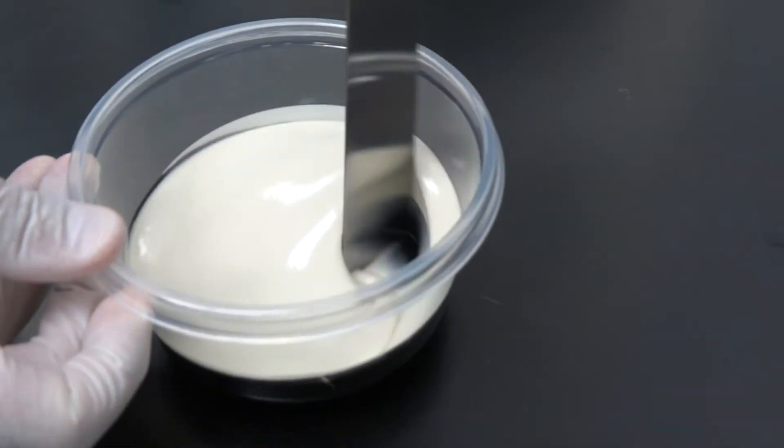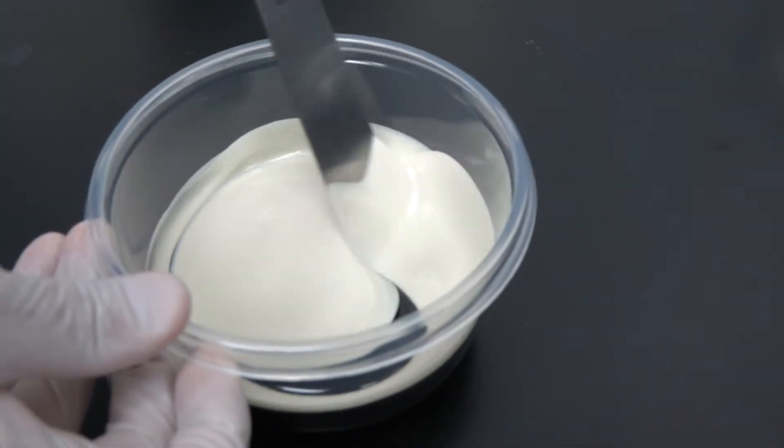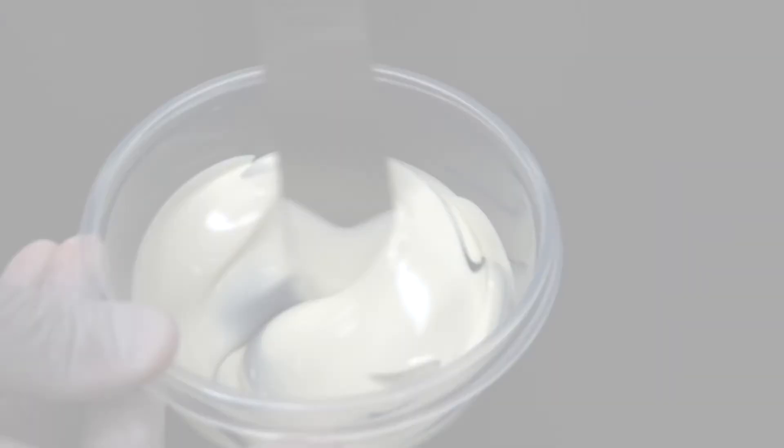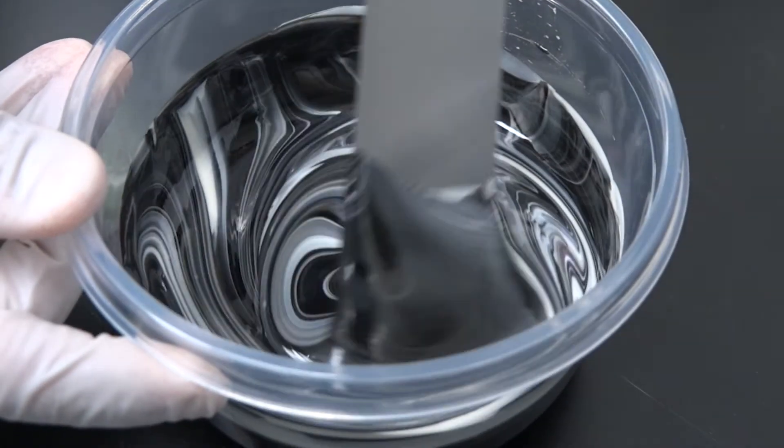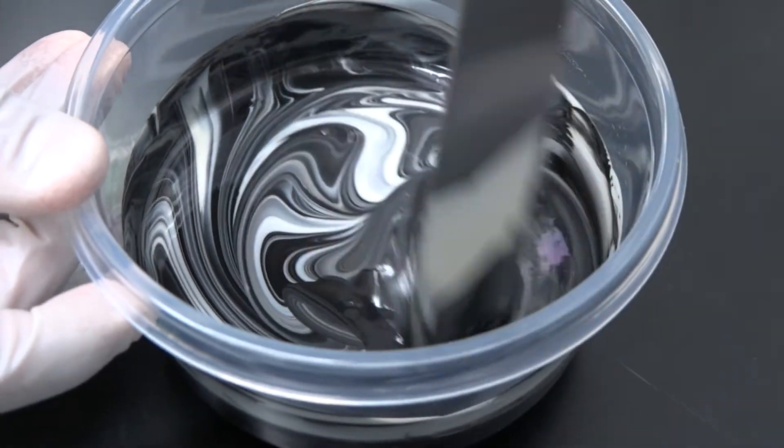Mix the two components with a spatula using a smooth blending motion to evenly distribute the part B into the part A. Make sure you avoid whipping air into the mix.